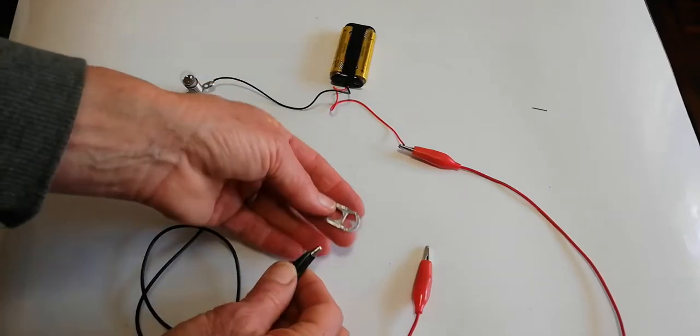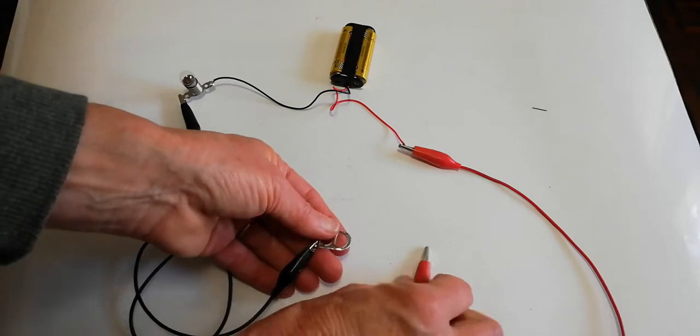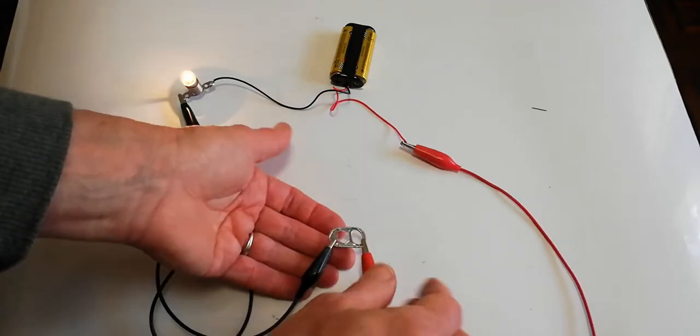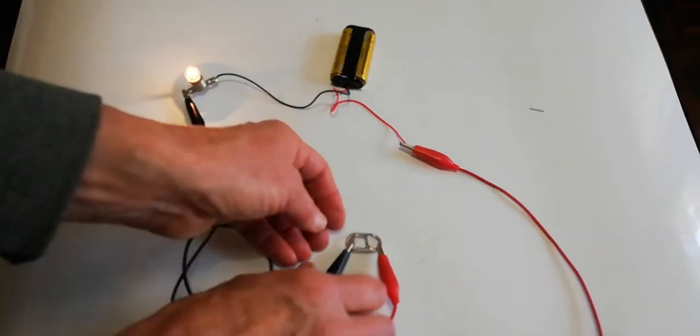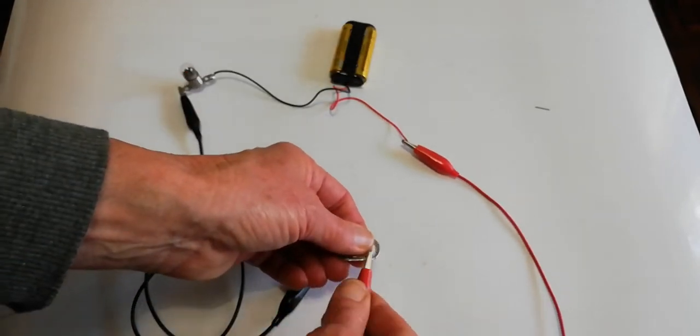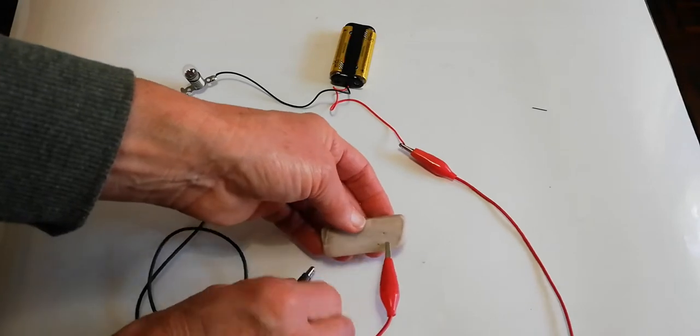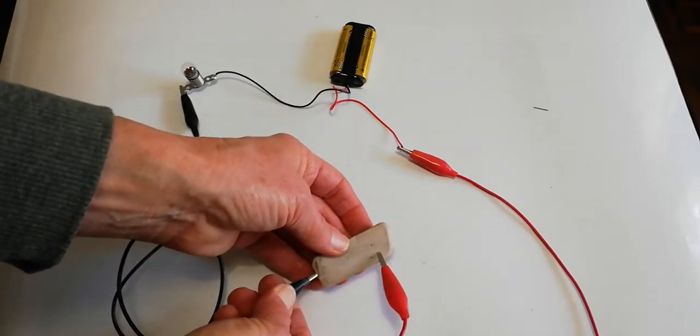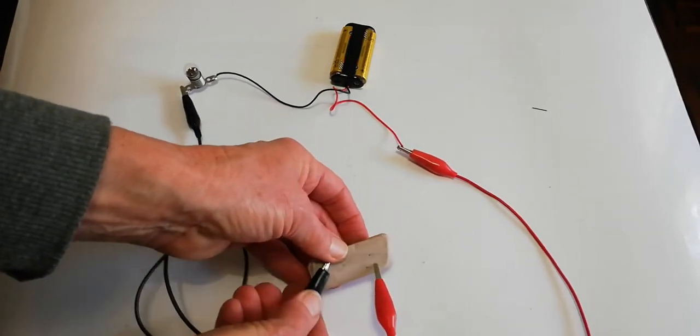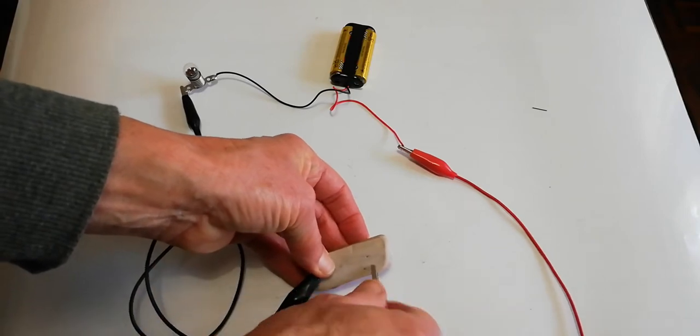This is the tab from a coke can. There we go, see that nicely. Here's my eraser. Just hold it on there, it doesn't want to nip.